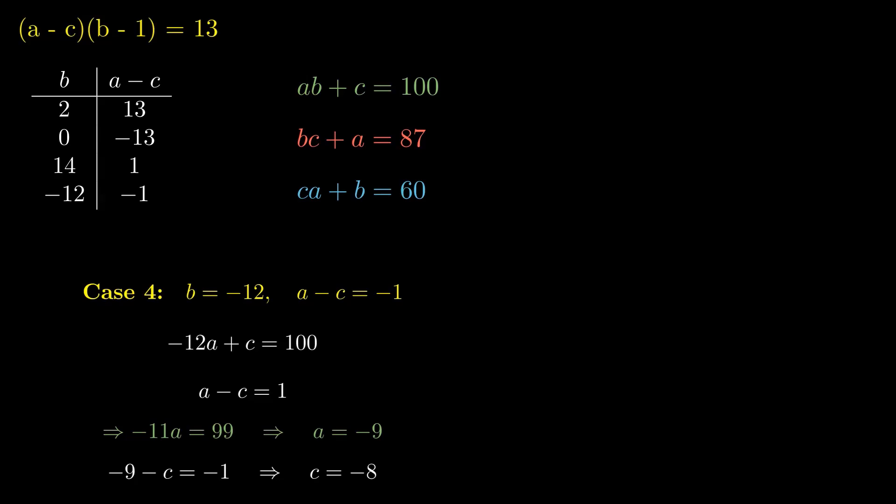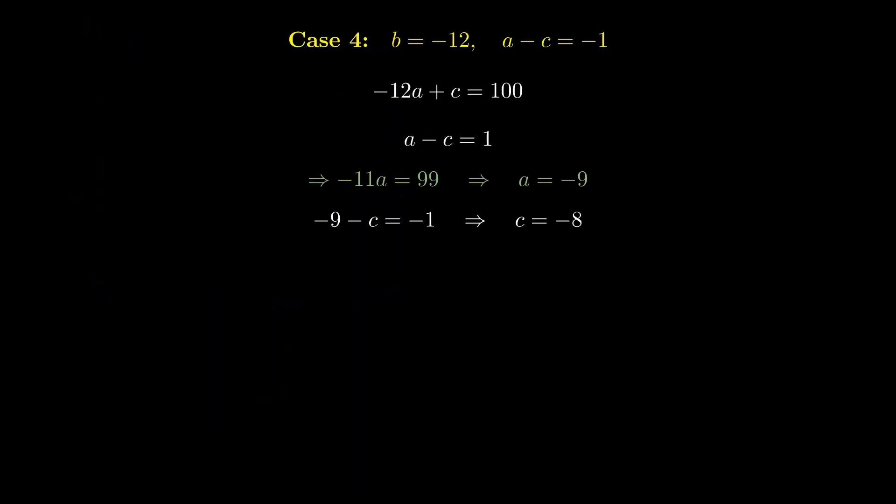Now for the final step, calculating AB plus BC plus CA. We plug in our numbers. Negative 9 times negative 12, that's 108. Negative 12 times negative 8, that's 96. Negative 8 times negative 9, that's 72. 108 plus 96 plus 72, that gives us 276. That means the correct answer is choice D.